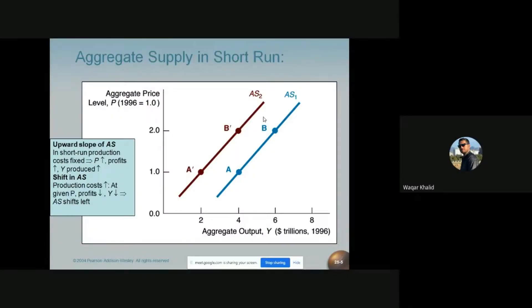What are the factors shifting the aggregate supply curve? How can the AS curve's original position be changed?